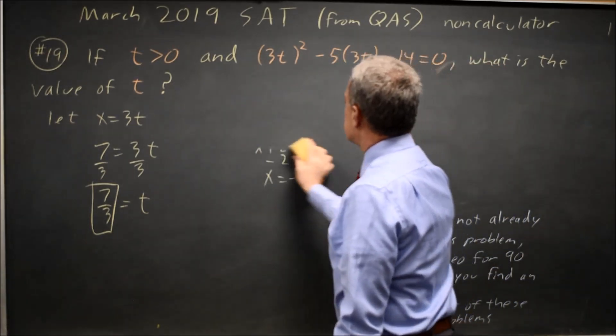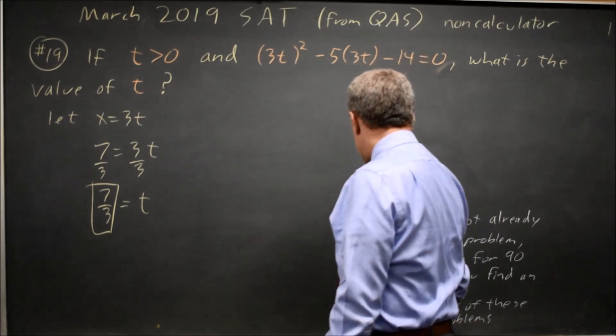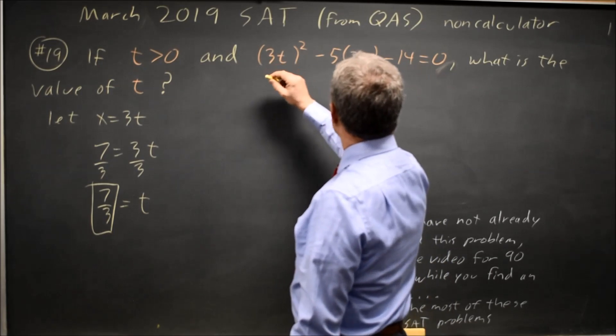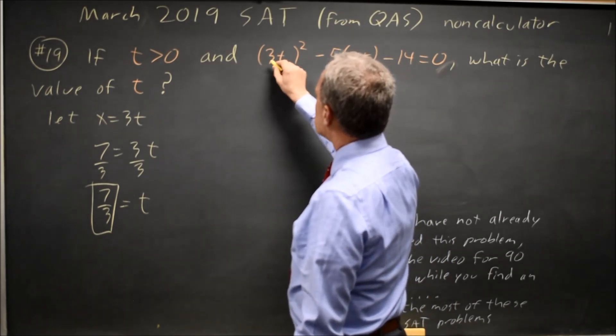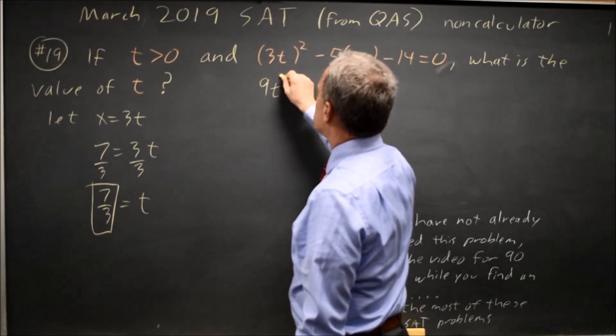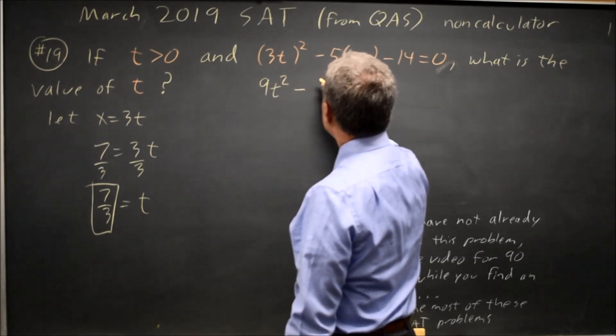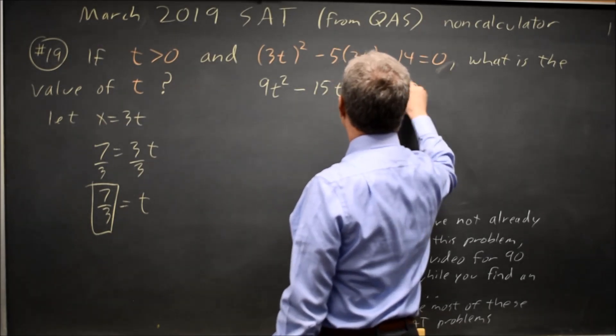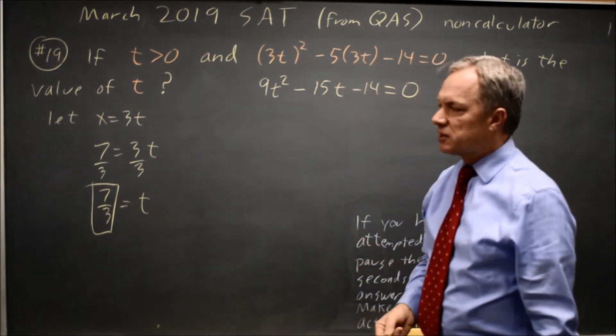Alternatively, those of you in calculus may have substituted in u for 3t, but it's the same process. If that looked hard, we can always square 3t, which is 3 squared times t squared is 9t squared, negative 5 times 3 is minus 15t, minus 14 equals 0. And now we have to factor this.